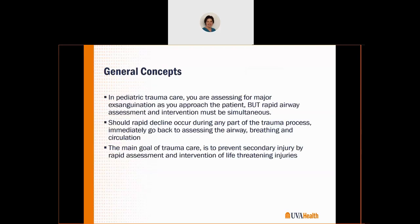Some general concepts in pediatric trauma care: you are assessing for major exsanguination as soon as you see the patient, while rapid airway assessment and intervention for maintaining a patent airway occur simultaneously. Should our patient decline at any point during the trauma process, we should immediately go back to assessing the ABCs. Our main goal of trauma care is to prevent secondary injury by rapid assessment and intervention of life-threatening injuries. Injury prevention is the only thing that will prevent the primary injury — but it's the body's response to that primary injury where we can have a direct impact by avoiding secondary injury.